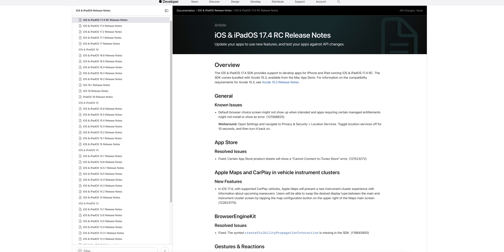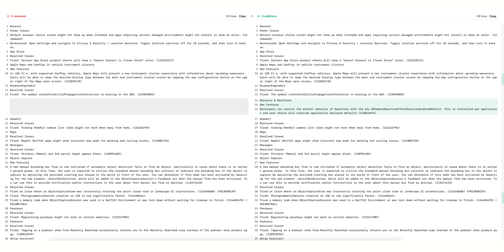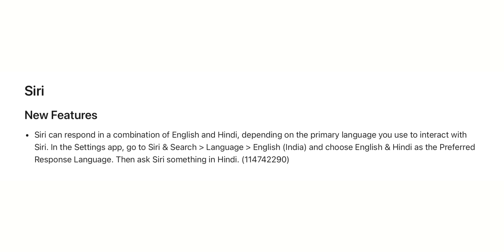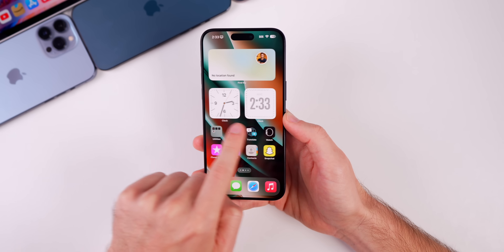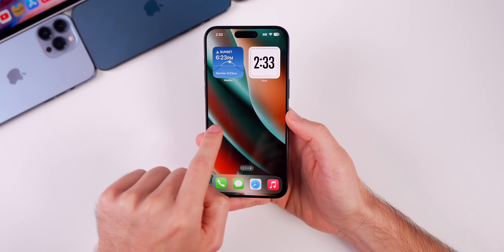Moving on to the release notes, there are only two new features added going from beta 4 to the RC — no bug fixes, just additions. The first is that Siri can now respond in a combination of English and Hindi depending on the primary language you use. The second is a new feature under Gestures and Reactions for developers.